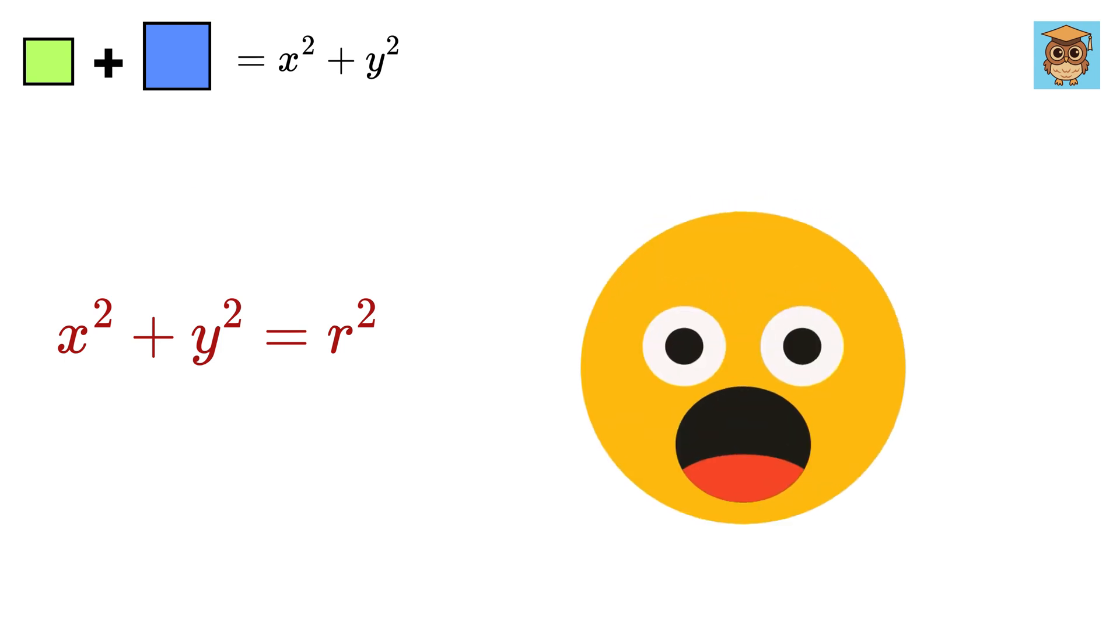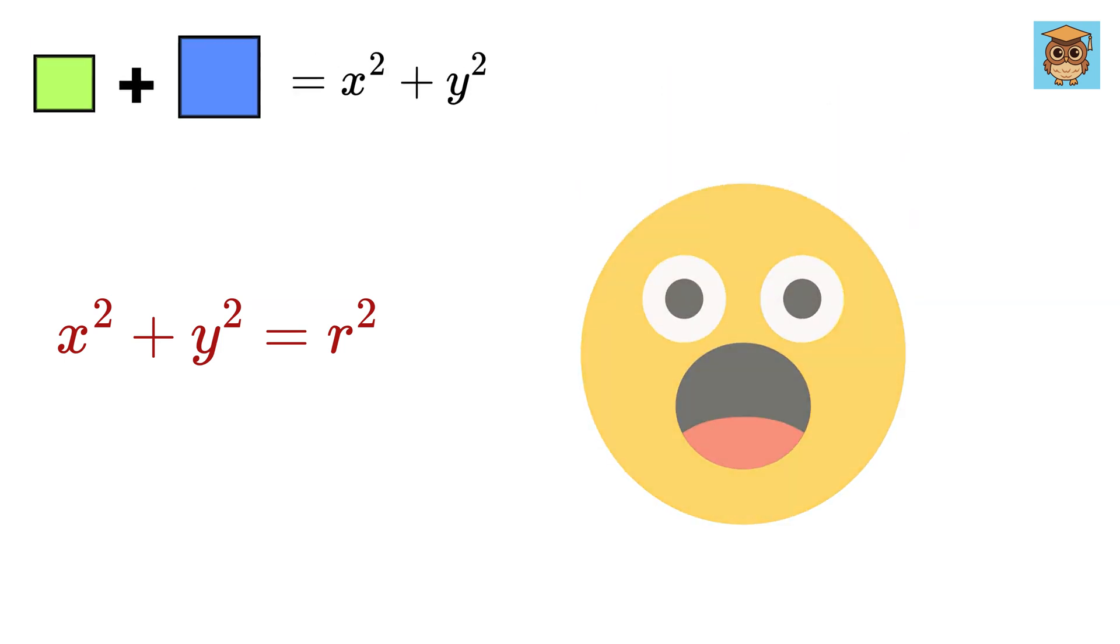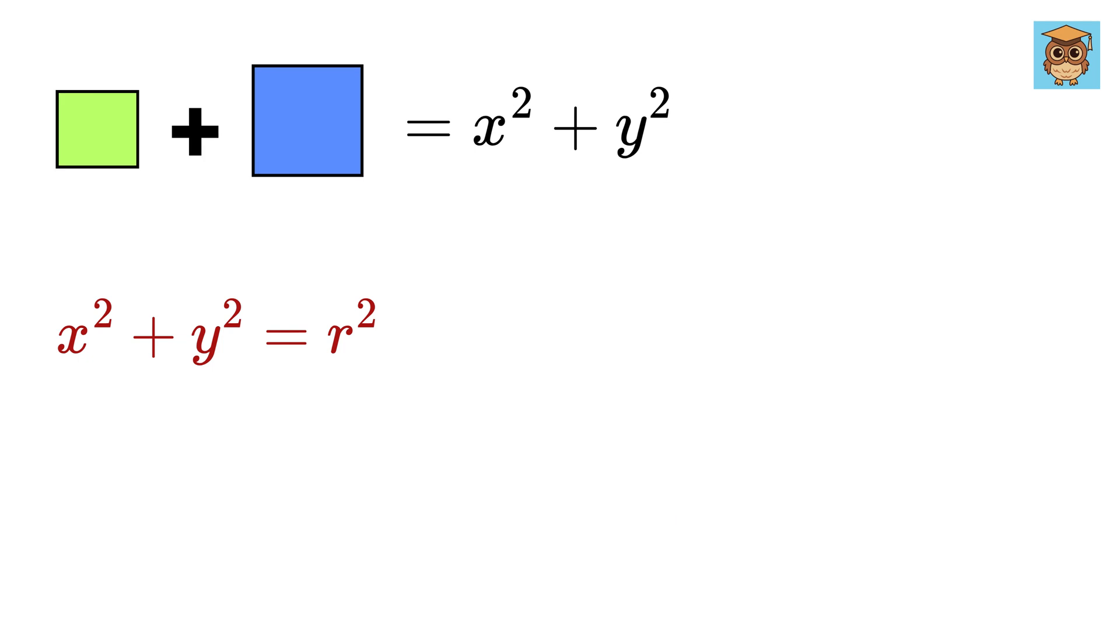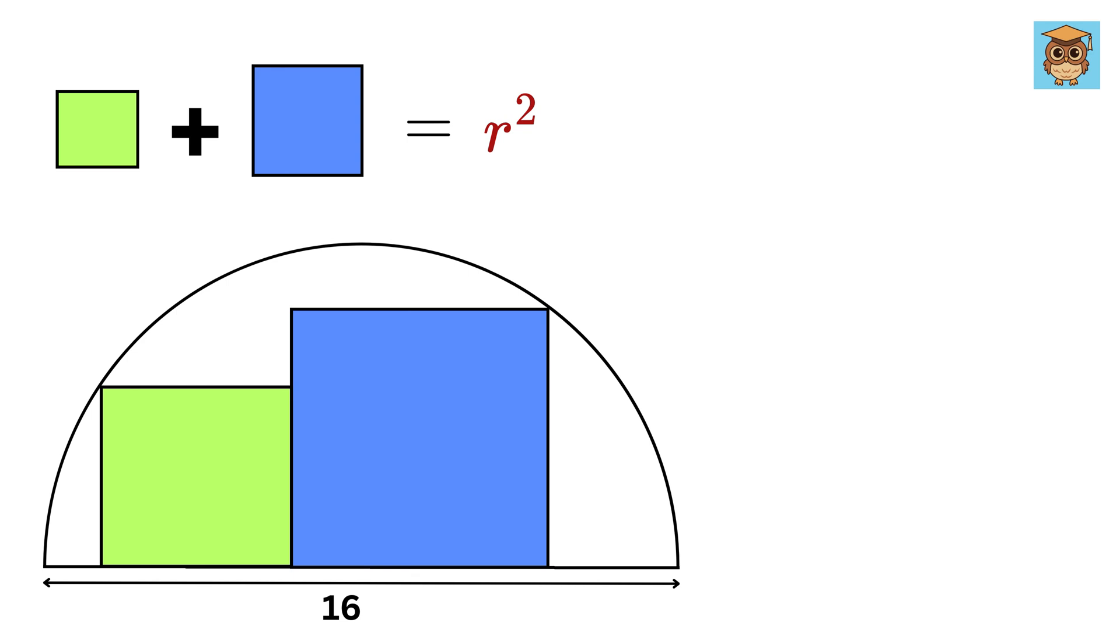Oh my god! My mind is really blown right now because the area of both these squares equals this whole thing and it is simply equal to R squared which is equal to 8 squared or 64 square units.